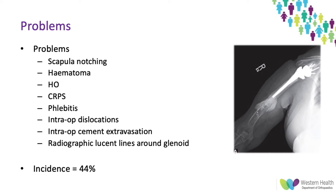In terms of problems, these are things like heterotopic ossification, hematomas, CRPS, and intraoperative dislocations — where you've had a dislocation right at the end of the case when you've already sewn up and had to closed reduce, but it hasn't had an effect on the patient's final outcome. Scapular notching is quite controversial, and I will talk about that individually, as many people think that is actually a complication and can affect the patient's final outcome.